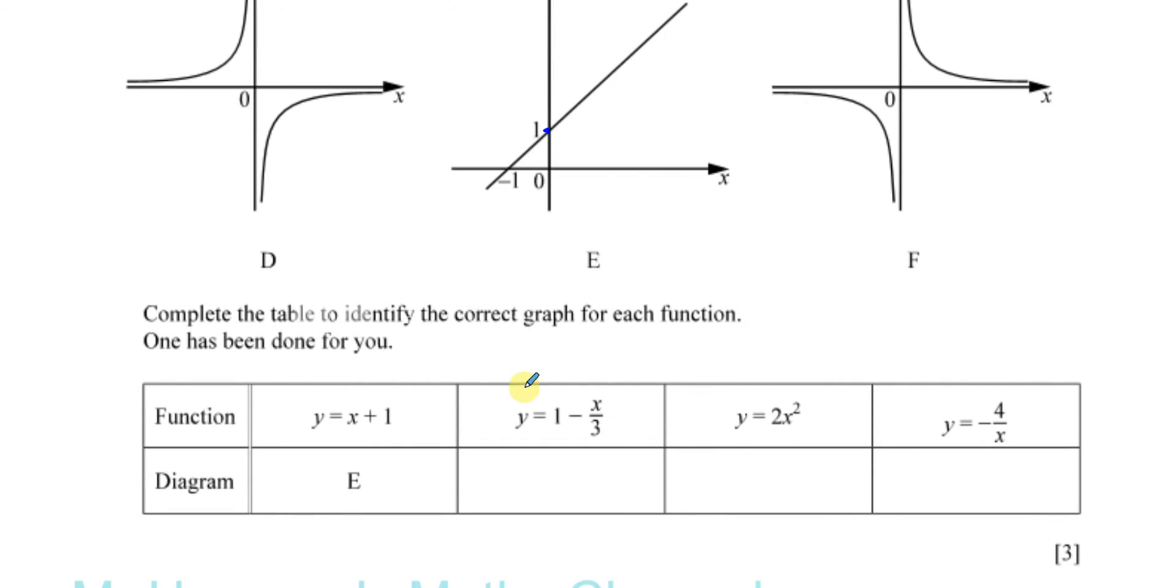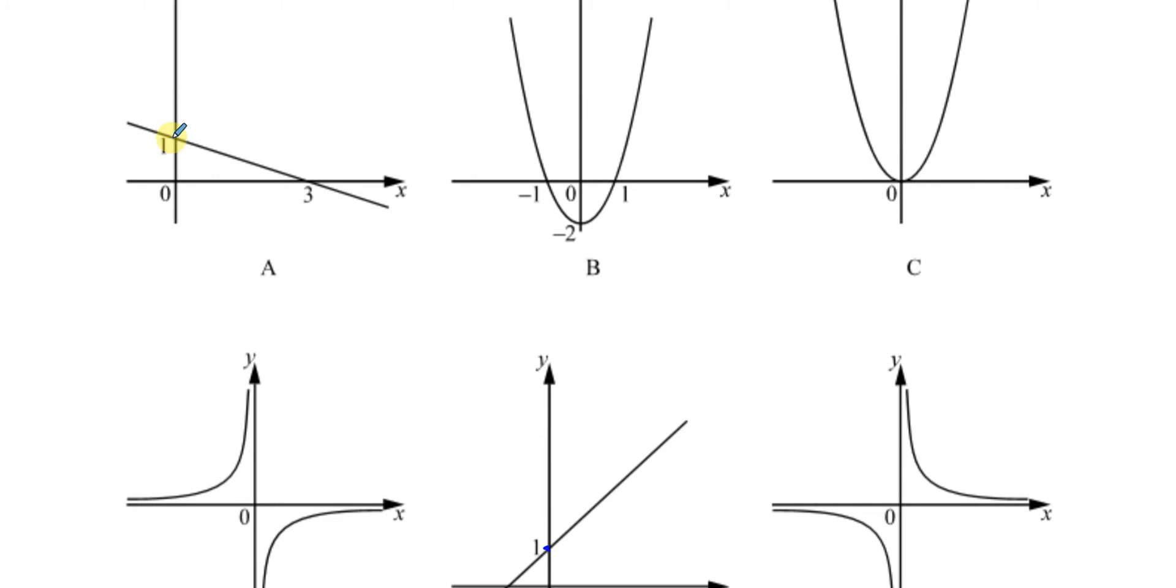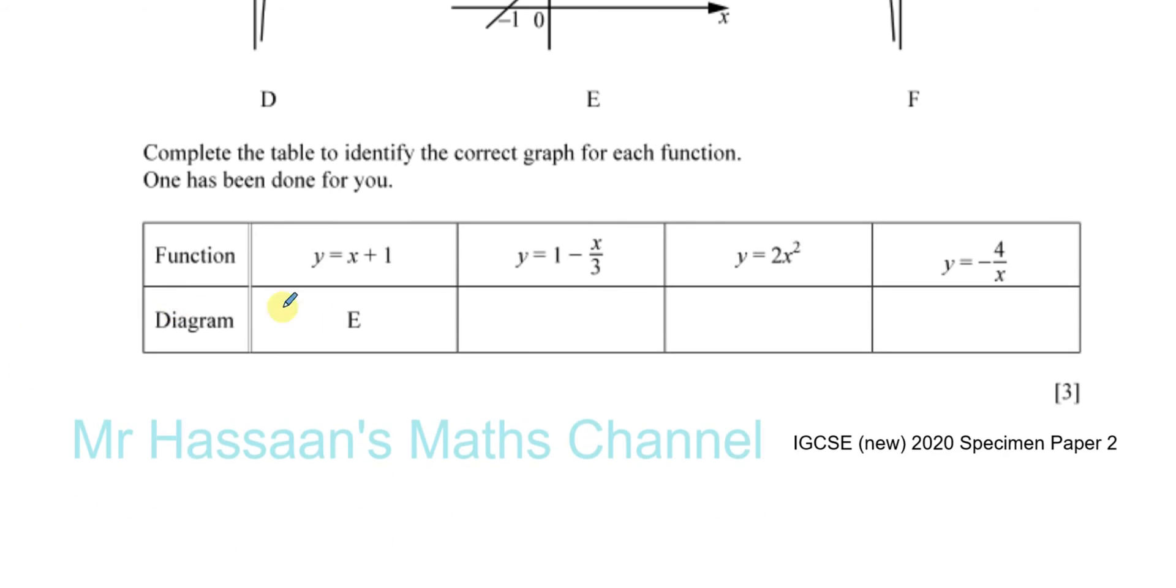y = mx + c. This is y = -1/3x + 1 basically, so m, the gradient, is -1/3 and the y-intercept is 1. You can see from here the y-intercept is 1 and the gradient is -1/3. For every one it goes down, it goes across three.